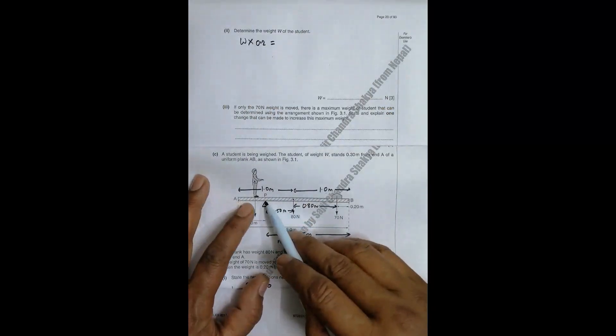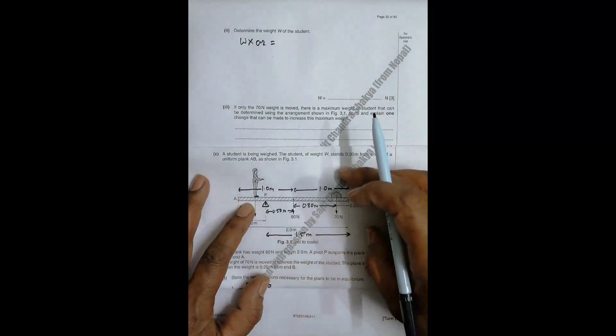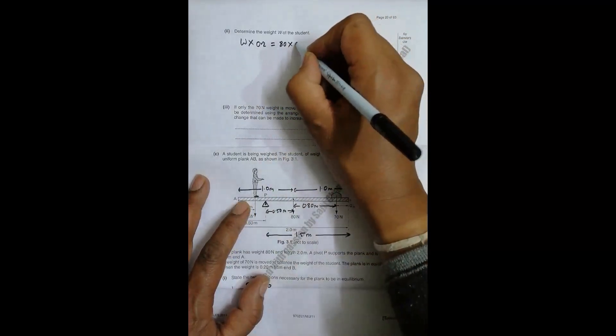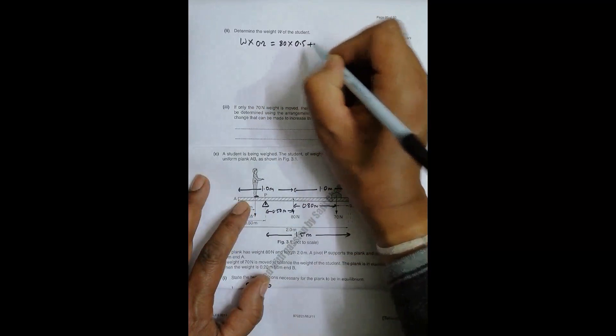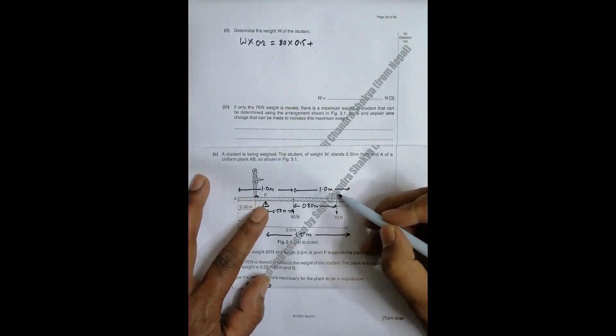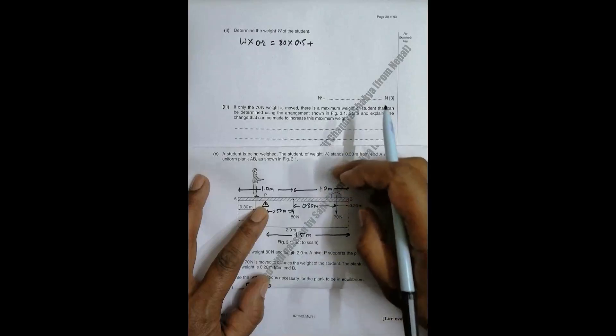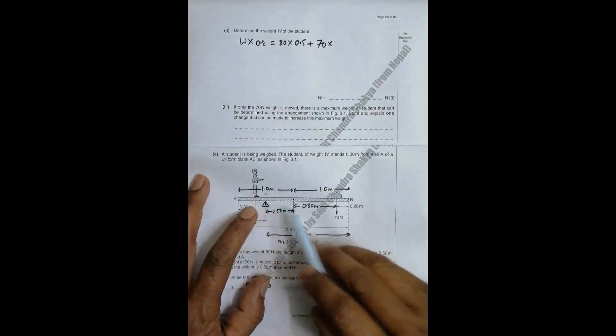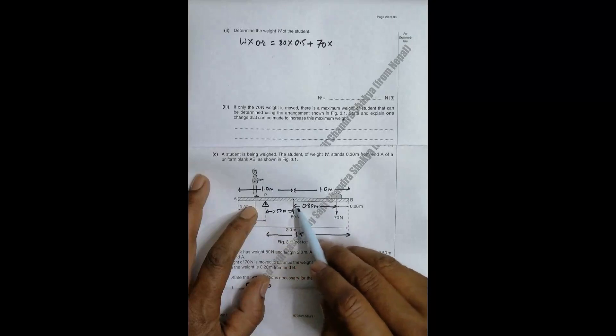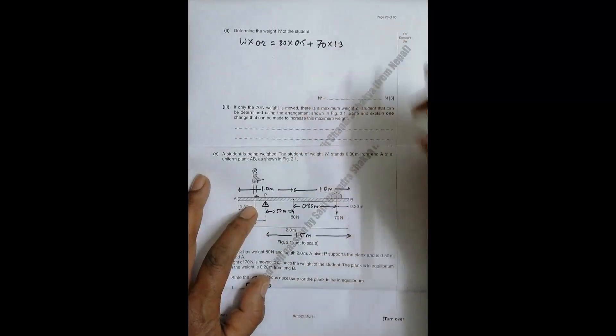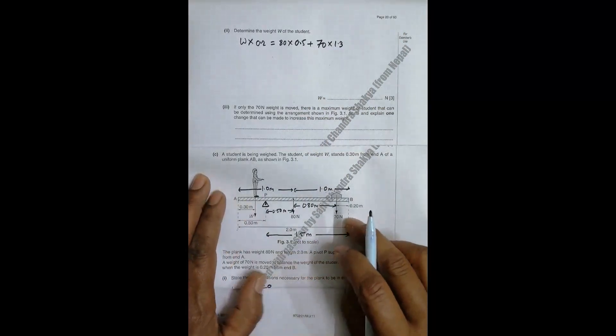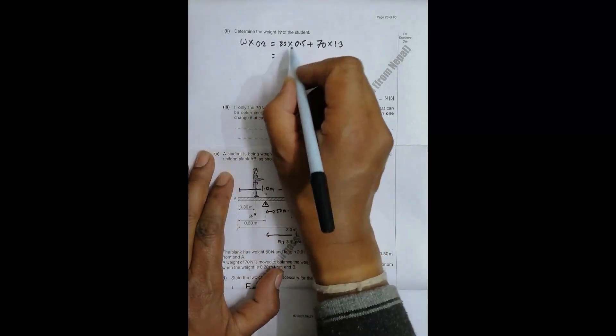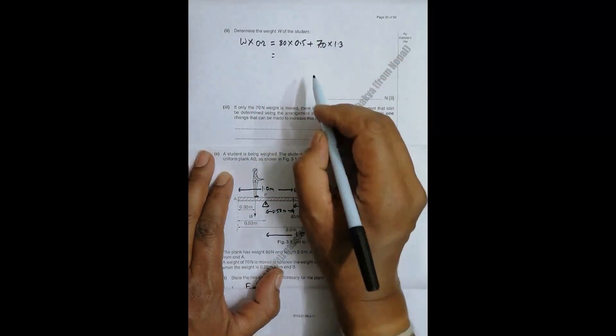Now this force, since this is the pivot, this force will try to move this thing in clockwise sense. So that is equal to 80 into 0.5 plus, with this pivot, this 70 Newton force also will try to move this in clockwise sense. So that's why I must have 70 into the distance from here to here, which is 0.50 plus 0.80, that's equal to 1.3 meters.